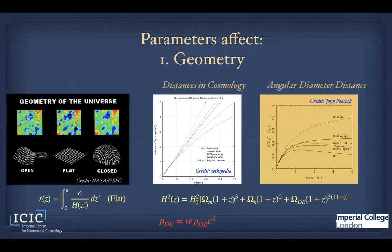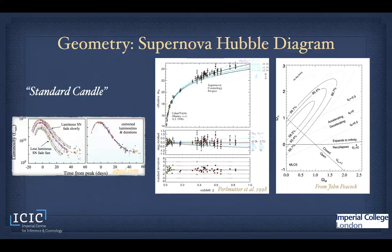The expansion rate H(z) in the Lambda CDM model depends on the matter density, curvature, and the amount and equation of state of dark energy. That's where we see sensitivity to dark energy properties. The supernova Hubble diagram is one way to probe this — using standardizable candles and comparing the data with theoretical curves corresponding to different amounts of dark matter and dark energy. This gave the first evidence that the universe was accelerating.